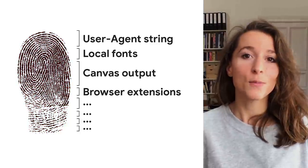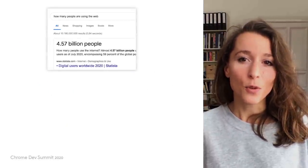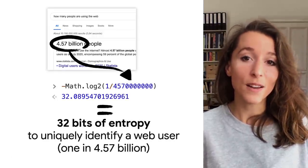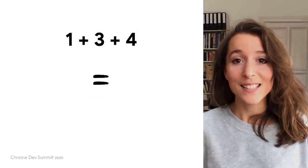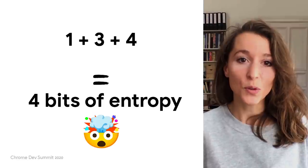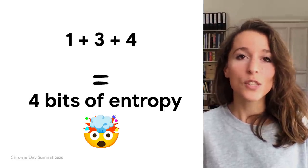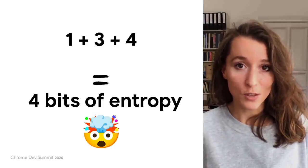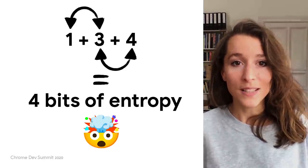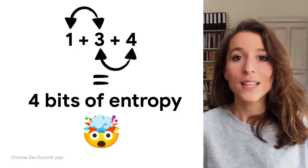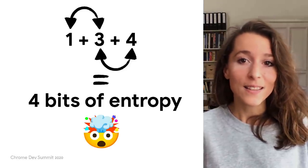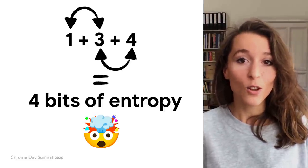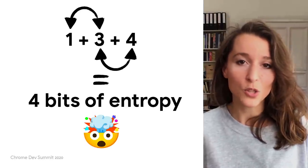A few interesting facts about entropy. You can calculate it with a formula that's based on probabilities. For example, about 32 bits of entropy are needed to uniquely identify a single web user. But, and this is the tricky part, you mostly can't just sum the entropy of different pieces of information from APIs to understand if a set of APIs would be identifying — for example, if it would expose over 32 bits of entropy. Because entropy is about probability, APIs can correlate. For example, if a user speaks Greek, the probability that they have a specific font installed is much higher. So if you already know that they speak Greek, seeing that font in the local font list doesn't give you that much more information or entropy.